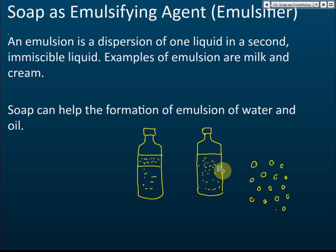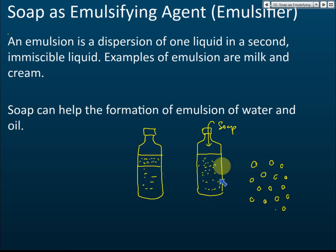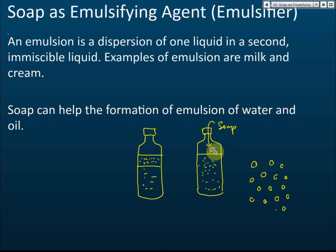To make a permanent emulsion, where you don't want the oil to separate from the water again, you can add soap. You add soap, then shake it, and again you get the same creamy emulsion — oil droplets inside water. But this time, even if you leave it for a few hours or days, the oil will not separate from the water again. So in this case, soap plays the role of an emulsifying agent, or emulsifier.